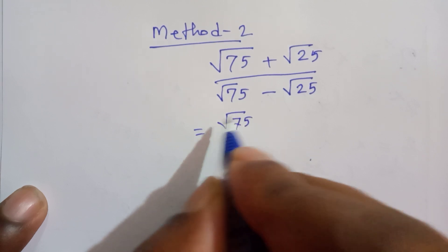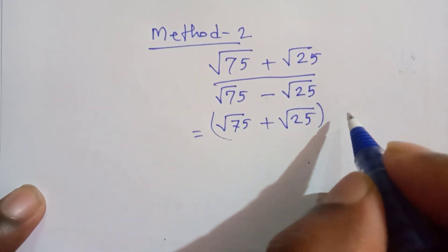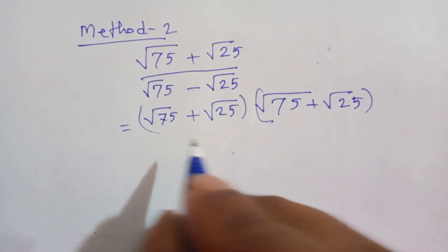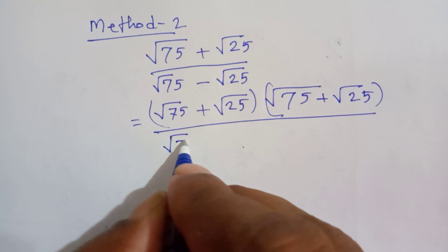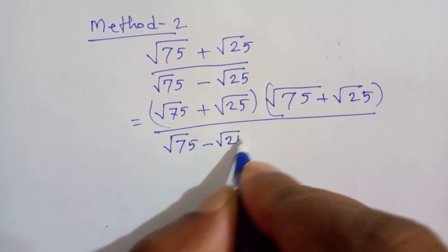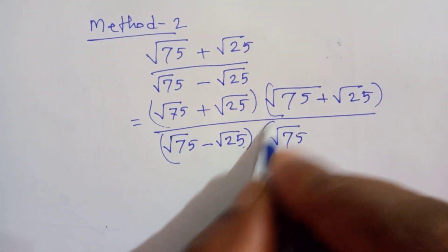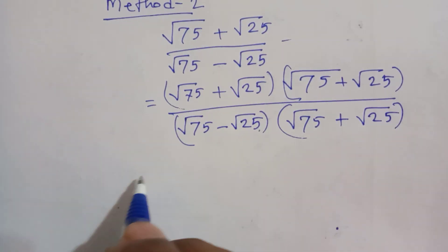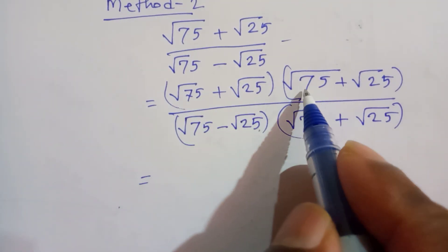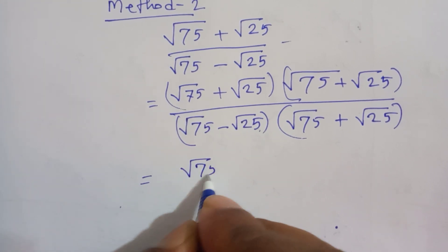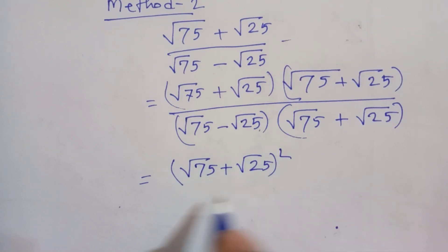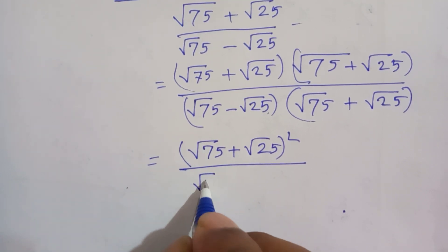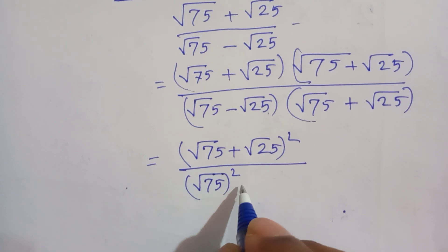We multiply by (root 25 plus root 25) — that is, we use (root 75 plus root 25) as the conjugate factor. In the denominator, we apply the (a + b)(a − b) = a² − b² formula, giving root 75 whole squared minus root 25 whole squared.